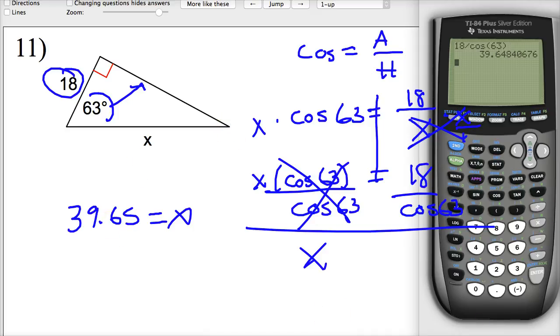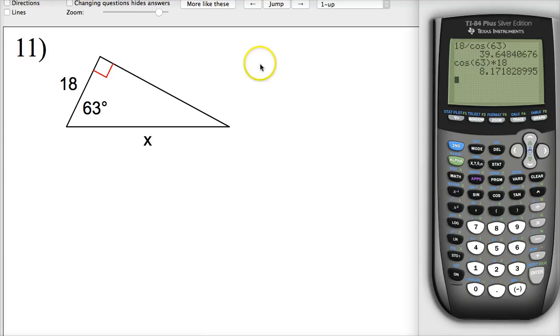If you do it the other way, where you do cosine 63 times 18, you'll get 8. Well, obviously, this side is not smaller than this side. Even the ones saying not drawn to scale are usually sort of close. Just think about whether the answer is reasonable or not and you'll do yourself a huge favor.